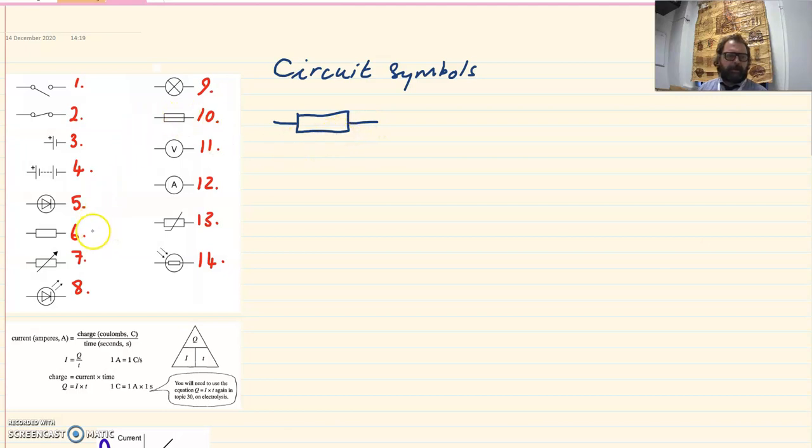So anything that's got this rectangular shape is some sort of resistor, and the simplest type would be a fixed resistor which would have a standard value. Notice that we've got a number like this. Here's our standard fixed resistor, number six. Number seven, with an arrow through, a variable resistor, one where we can change the resistance in the same way as you'd use a dimmer switch in a circuit.